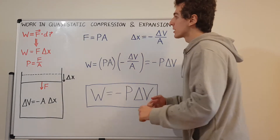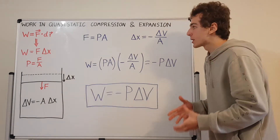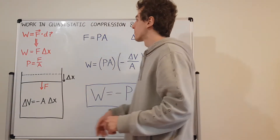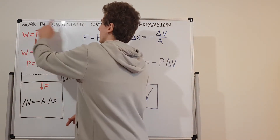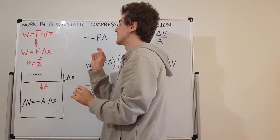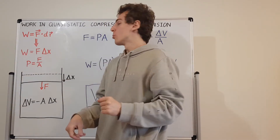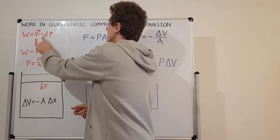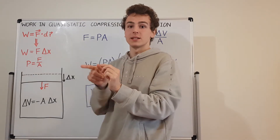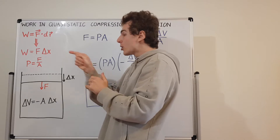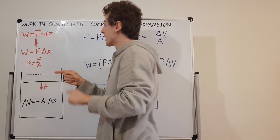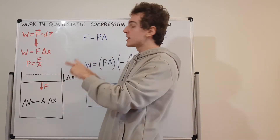We're going to look at the quantity of work — how does work change and how do we calculate work for a piston containing some gas? First, let's look at the definition of work. A tiny amount of work, let's call that dw, is a little bit of work done during a process. To define it, you need a force vector and a tiny displacement vector dr, which is a three-dimensional vector pointing in the direction of displacement. What you have to do is take the dot product of those two vectors.